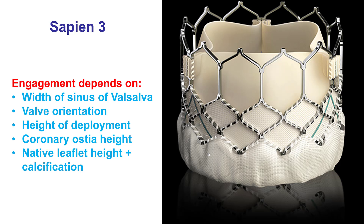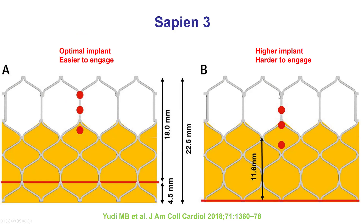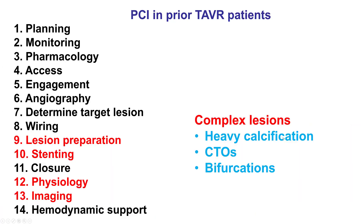Coronary engagement is easier with the Sapien valve, as there is less metallic frame. Still, if the coronary ostia are positioned behind the commissural post, that can make it harder. And also if there is high implantation, that can make engagement of the coronary artery harder.